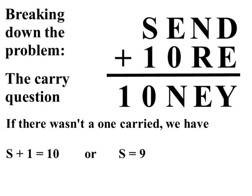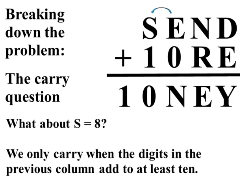So, let's think about S equals 8. We only carry when the digits in the previous column add up to at least 10. So, let's look at that column. It's E plus 0 equals N.